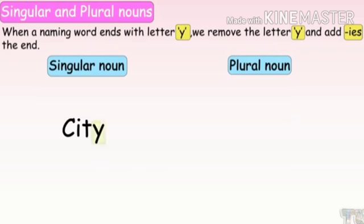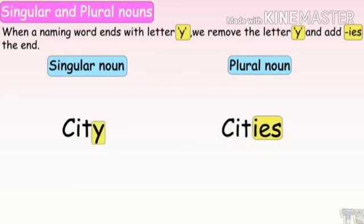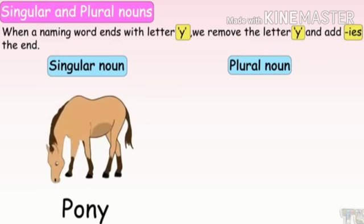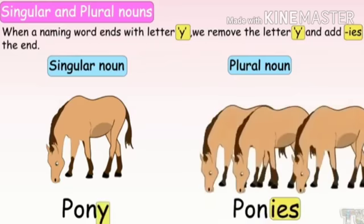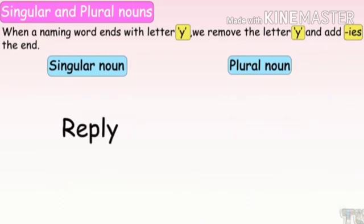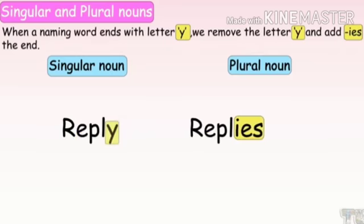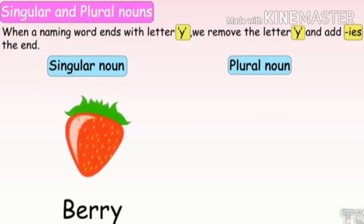Another example: city — C-I-T-Y. Remove Y and write IES — cities. Pony — P-O-N-Y. Remove Y and write IES — ponies. Reply — R-E-P-L-Y. Remove Y and write IES — replies. So 'reply' is a singular noun and 'replies' is a plural noun. Berry — B-E-R-R-Y. Remove Y and write IES — berries. Lady — remove Y and write IES — ladies.